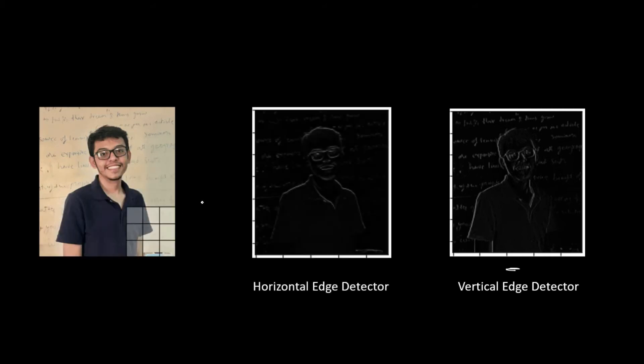For example, this is a beautiful picture of mine, and when I pass a vertical edge detection filter on this image, it generates me this image. It detects all the vertical edges that are present in this entire image. And similarly, if I slide over a horizontal edge detector filter of convolutional neural network, then it will detect me all the horizontal edges. Now, these two images are generated by using a filter of only size 3x3 pixel.